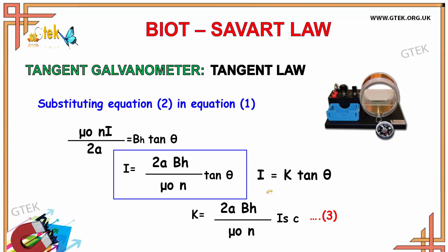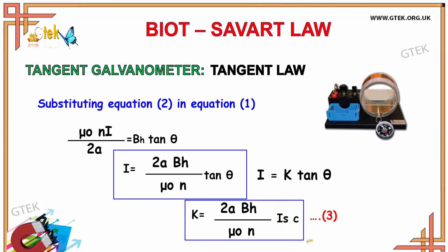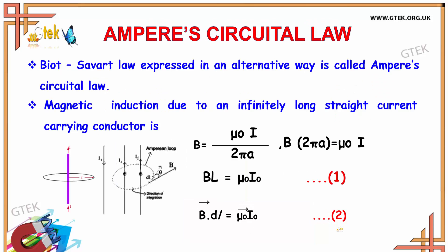So I equals K tan theta, where they make this value a constant. K is given as 2A BH divided by mu naught N. This gives the reduction constant equation for the tangent galvanometer.